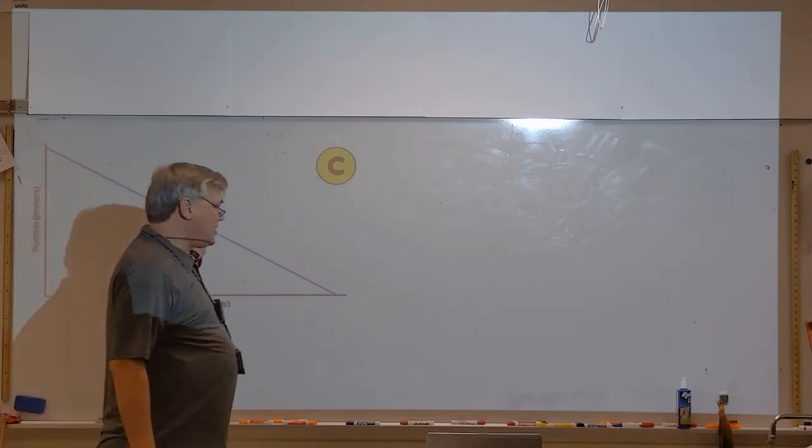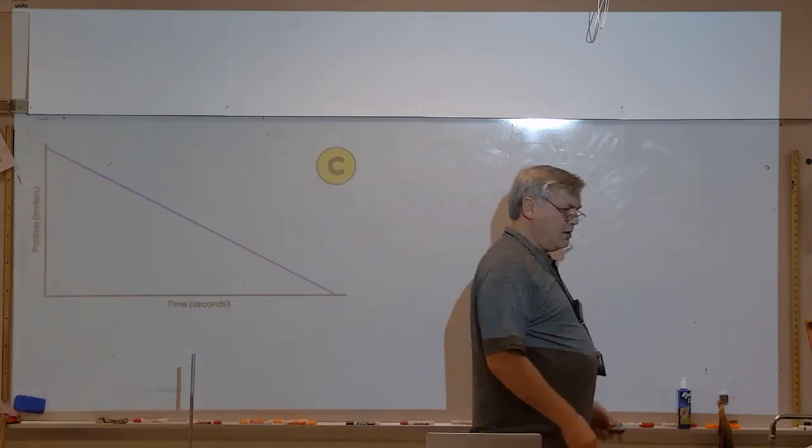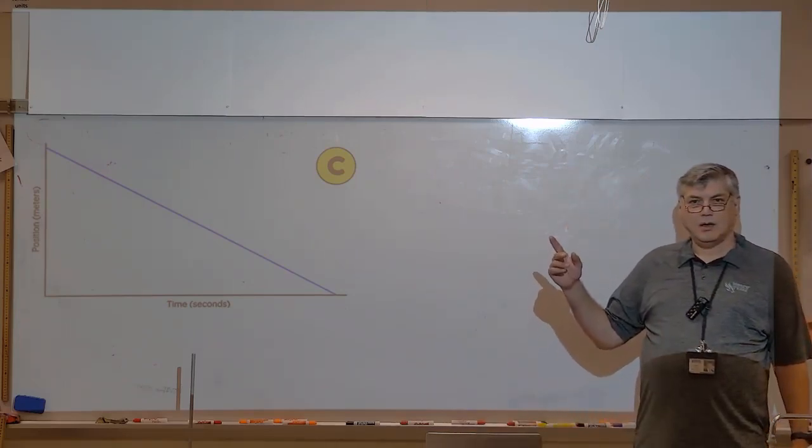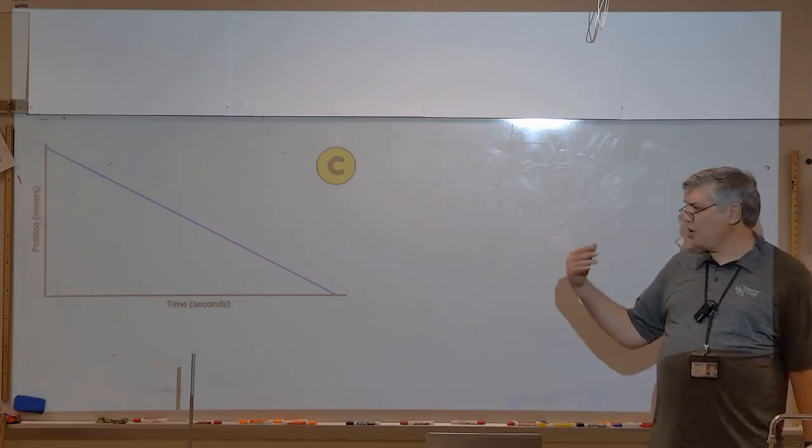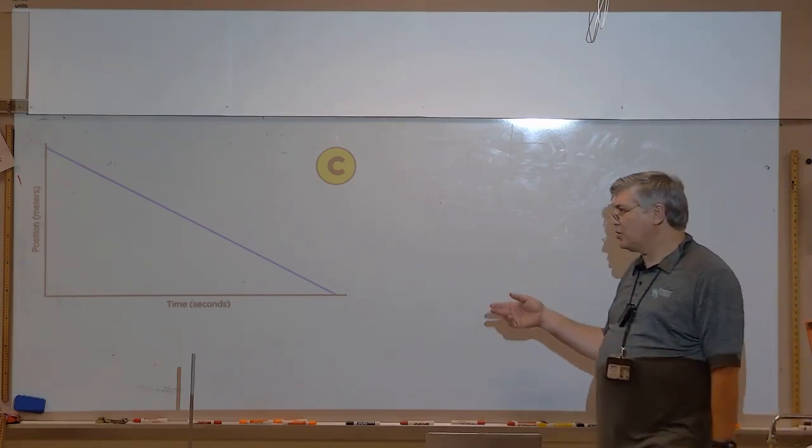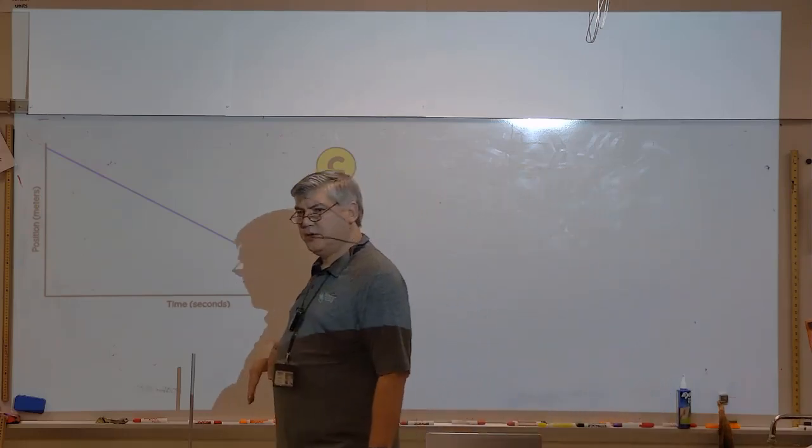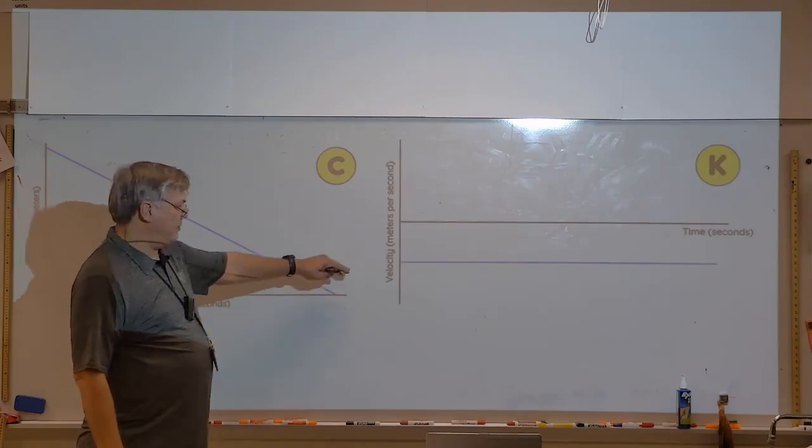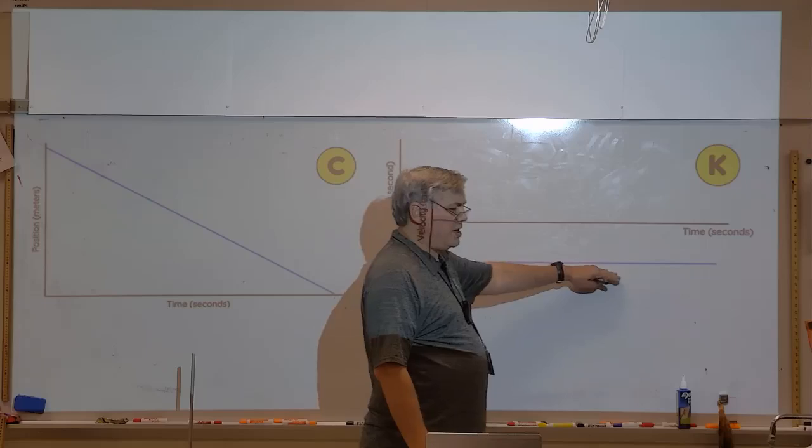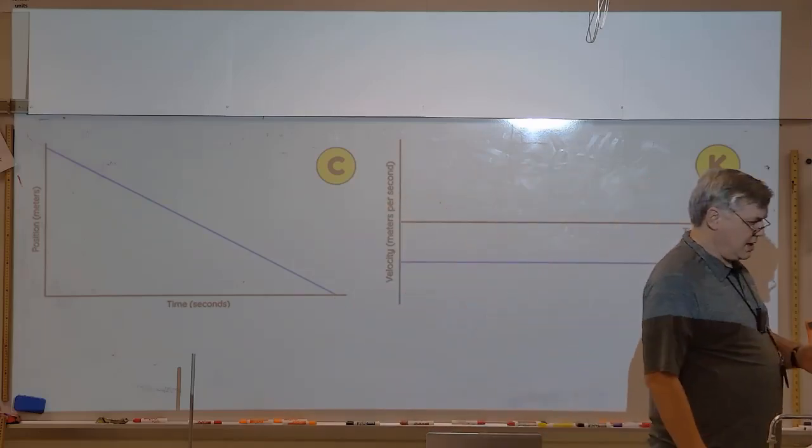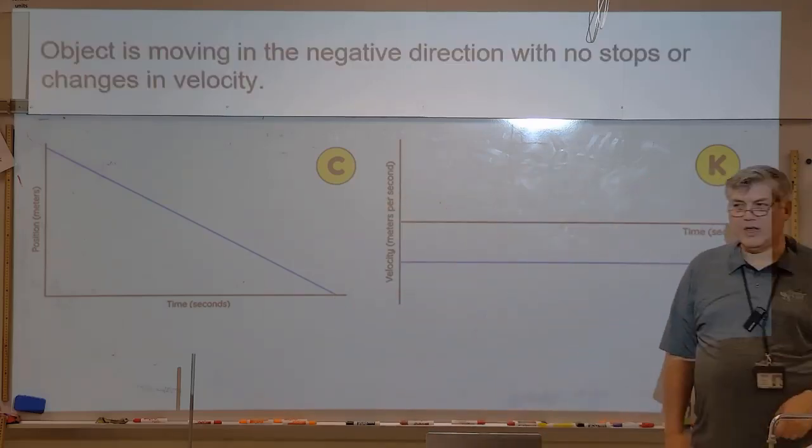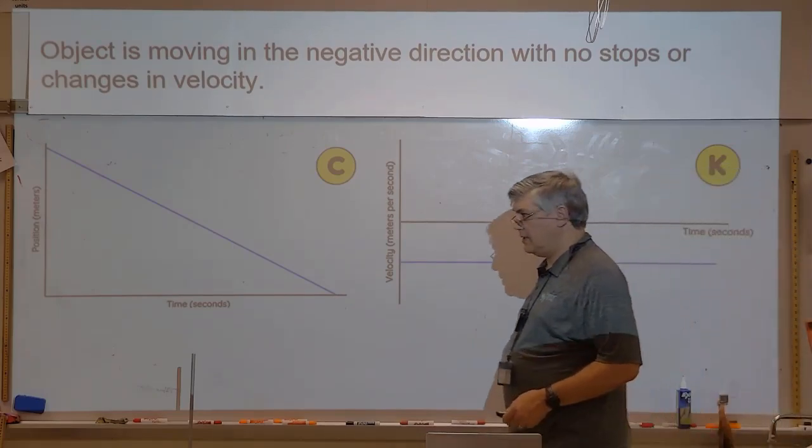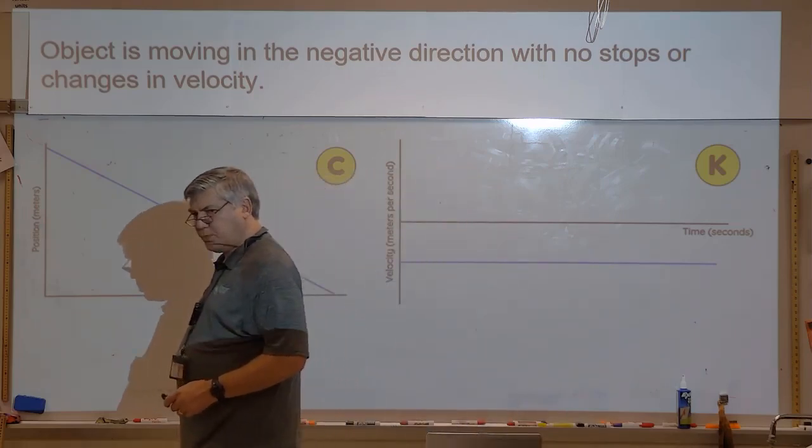Next one. What's happening here? We're going which way? Negative or backwards, right? And we're doing that the whole time. So above or below the zero line on the velocity time graph? Below. Below, right. So just one constant steady thing. So this would be object is moving in the negative direction with no stops and no changes in velocity. Pretty simple.